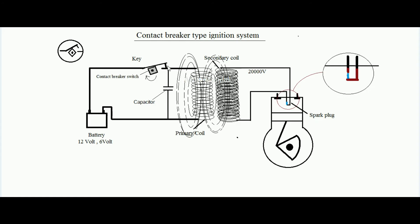One more thing to keep in mind: although I am using the name transformer, this system having a primary coil and secondary coil in an ignition system is not called a transformer. It is called an ignition coil.